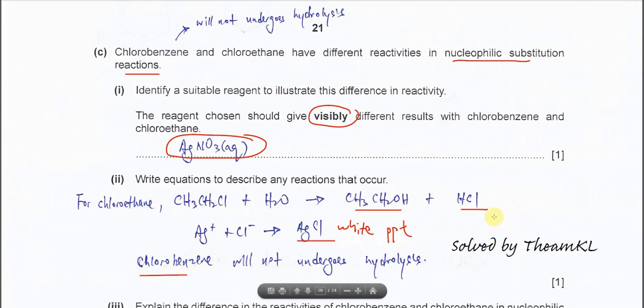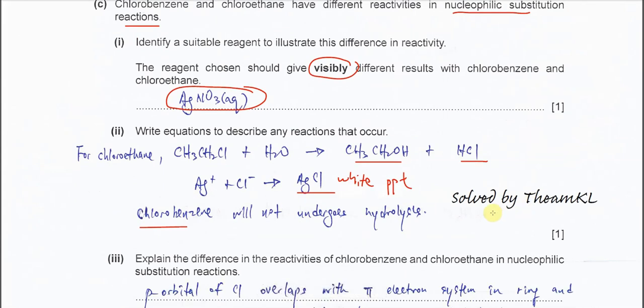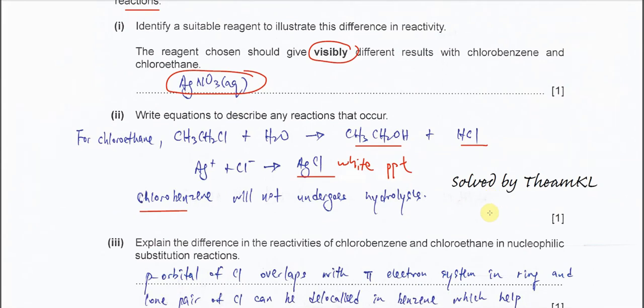But the chlorobenzene will not form the precipitate because it will not undergo hydrolysis, so no reactions happen. These are the differences between chloroethane and chlorobenzene.